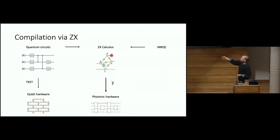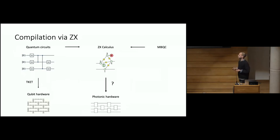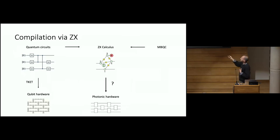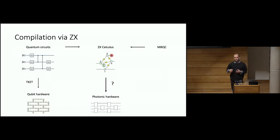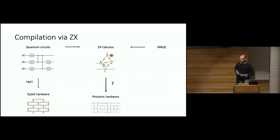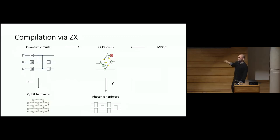We skip the intermediate step and go directly from the ZX calculus to photonics. Another advantage of working with the ZX calculus is that it has a very strong relationship with measurement-based quantum computing, and photonic computing is well understood from a measurement-based perspective. So we want to go from ZX to photonics.